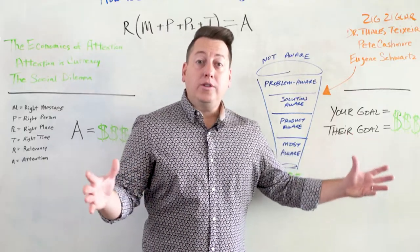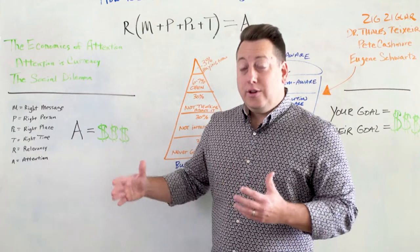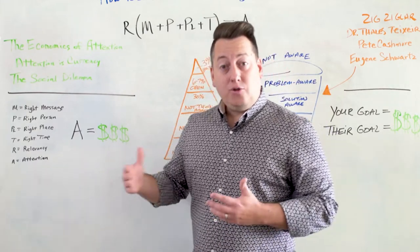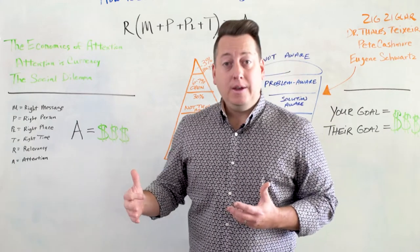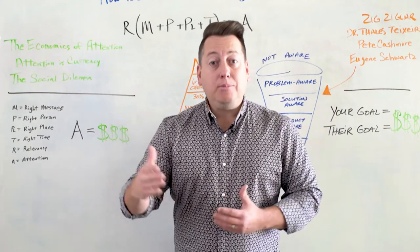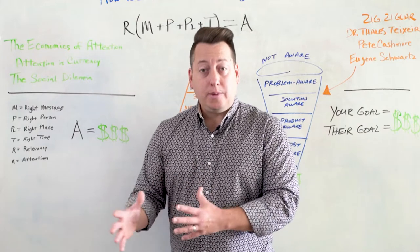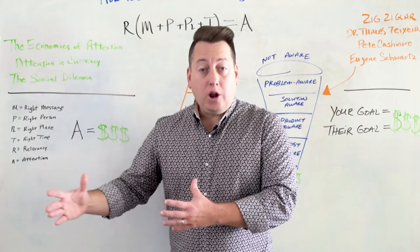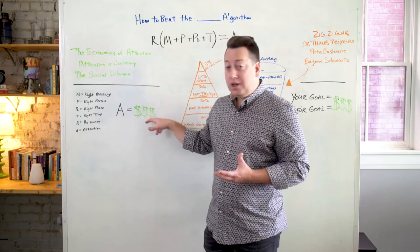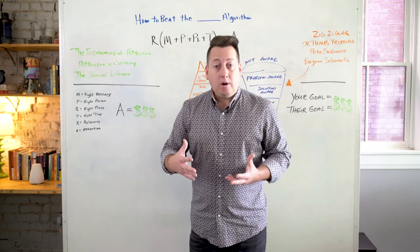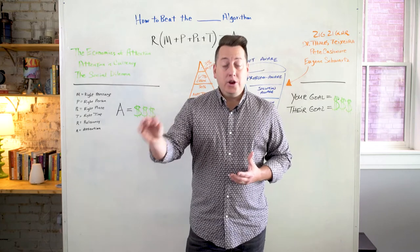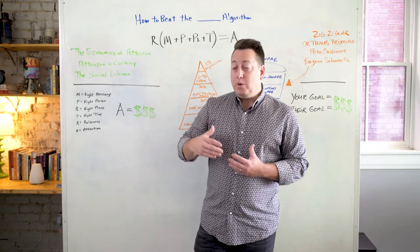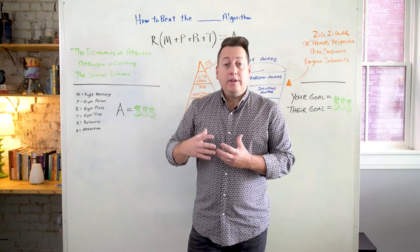So how do you help the Facebooks and the Googles of the world increase their revenue, achieve their objectives of driving more revenue? Well, the answer is you have to create content that captures and keeps your users, your customers, your Facebook followers, attention. Because attention, as Pete Cashmore of Mashable, CEO of Mashable says, attention is the new currency. Attention. We spend it. We use it. It's valuable.